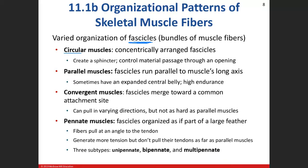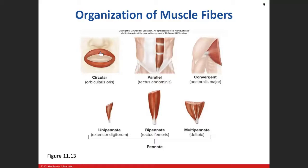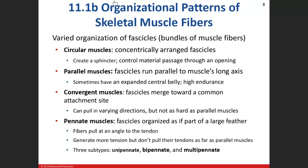Circular muscles are found around an opening, and in some cases we refer to them as a sphincter — like the cardiac sphincter and pyloric sphincter in the stomach. These circular muscles allow the opening they surround to become smaller when they contract. For the orbicularis oculi, if you squint your eyes, you're closing that opening — you're contracting those circular muscle fibers.